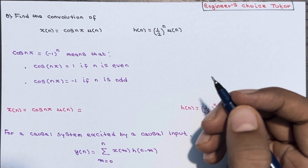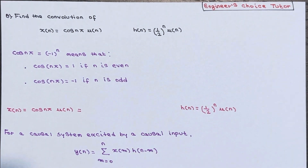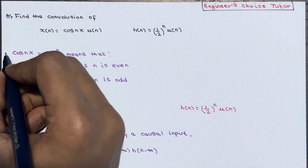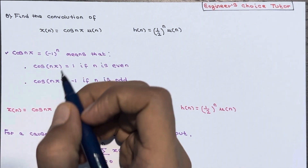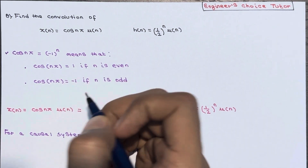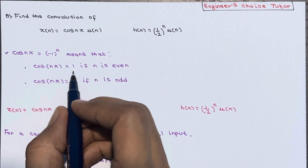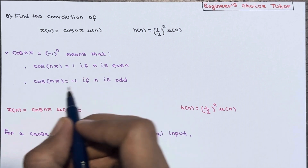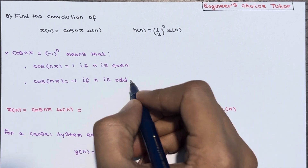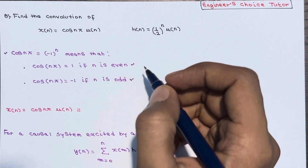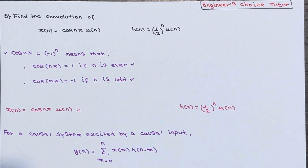It is important to understand the behavior of cos(nπ). Basically, cos(nπ) equals (-1)^n, which means it gives you 1 if n is even and -1 if n is odd. This is from trigonometry.